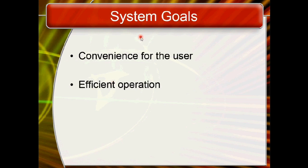There are two main goals of an operating system. The first is convenience for the user — making the operating system easy to use. The second is efficient operation.